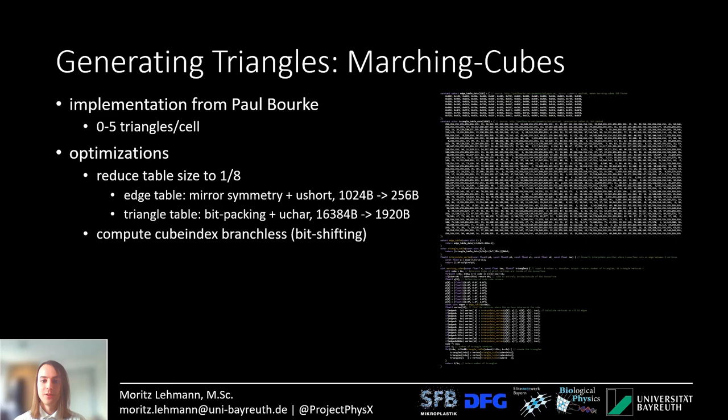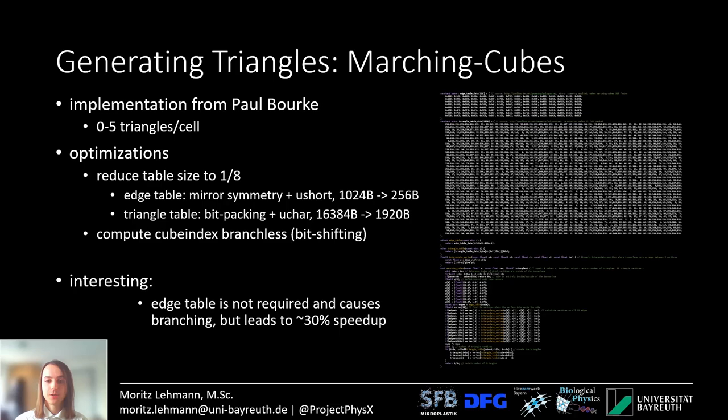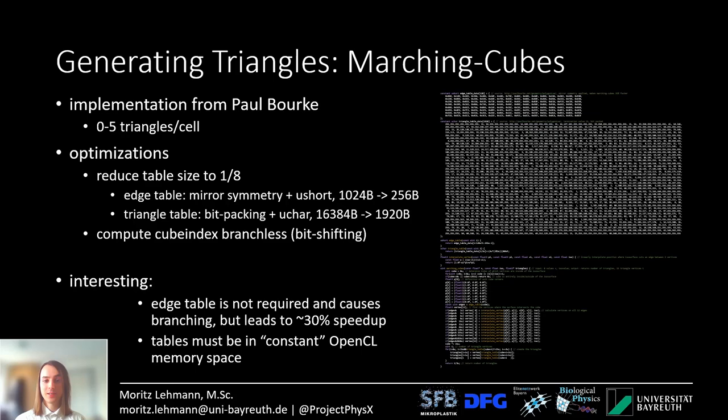Furthermore, I compute the cube index in a branchless manner with an unrolled loop and bit shifting. The entire marching cubes implementation is only about 100 lines of code. What is interesting is that the edge table is not strictly required for the algorithm — the edge table tells you which edges to interpolate and it leads to branching. However, it is actually about 30% faster to use the edge table even on the GPU, which quite surprised me. Moreover, the tables must be in constant memory space.